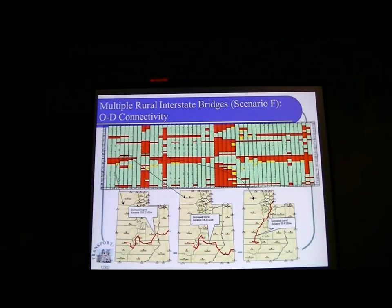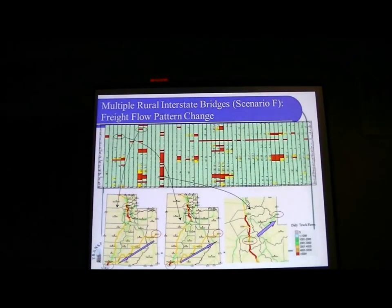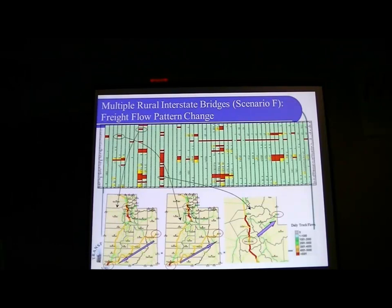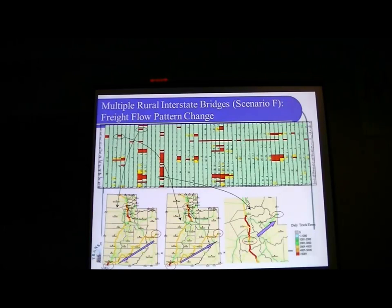With this information, decision makers can see where the problem is and how to address it. This is useful not only for statewide planners, but also for local government and MPO planners, to see — if we want to strengthen the transportation network, where is the problem, how are we going to solve it, and how are we going to prepare mitigation for this problem?